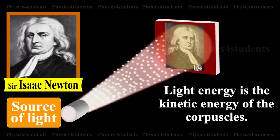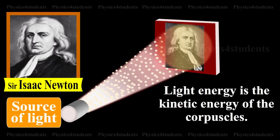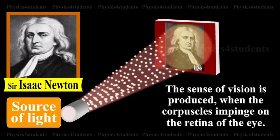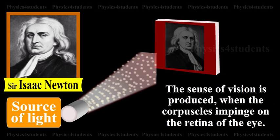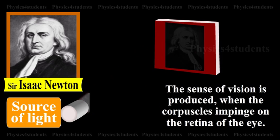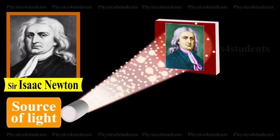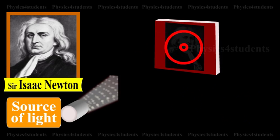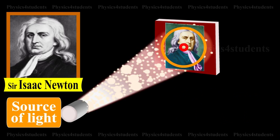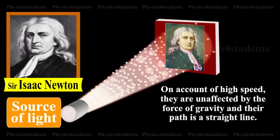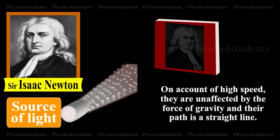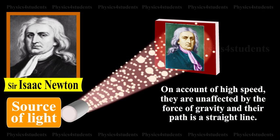Light energy is the kinetic energy of the corpuscles. The sense of vision is produced when the corpuscles impinge on the retina of the eye. The sensation of different colors was due to different sizes of the corpuscles. On account of high speed, they are unaffected by the force of gravity and their path is a straight line.